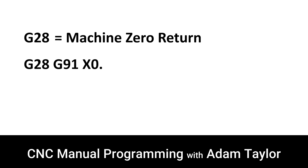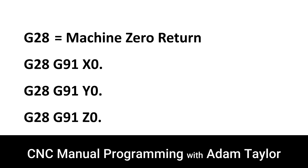This is a proper way to use G28 to send the machine home in the X-axis — notice that G28 is on the same block as the X0. Here we send it home in the Y-axis, with G28 on the same block as the Y0. And here we send the machine home in the Z-axis, with G28 on the same block as the Z0.